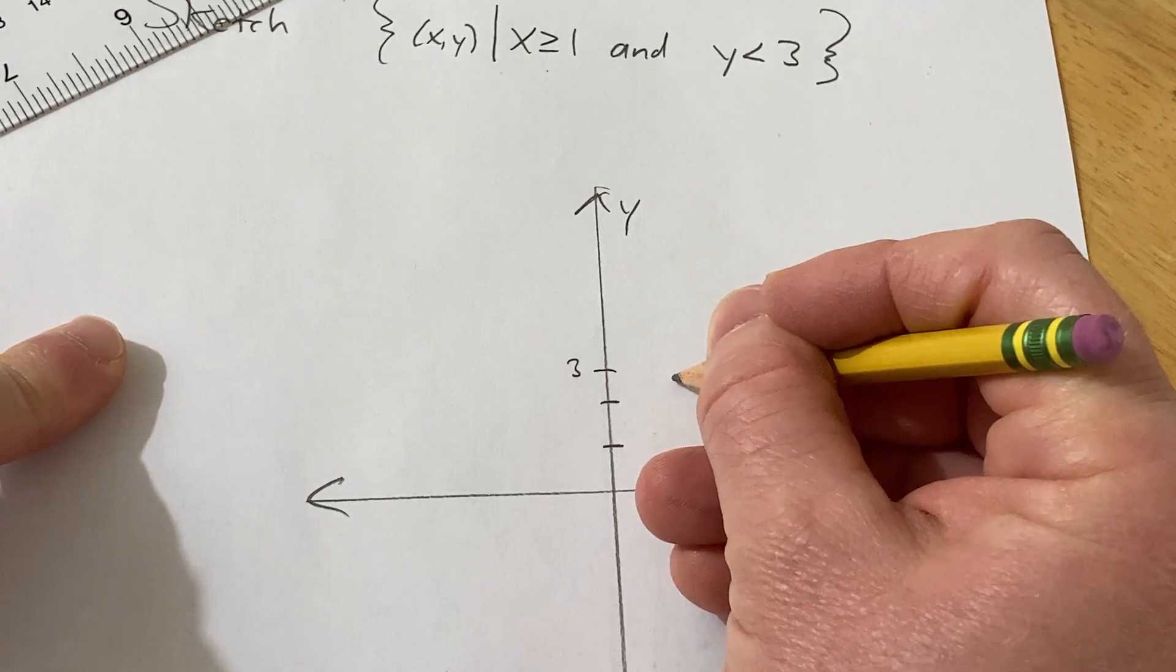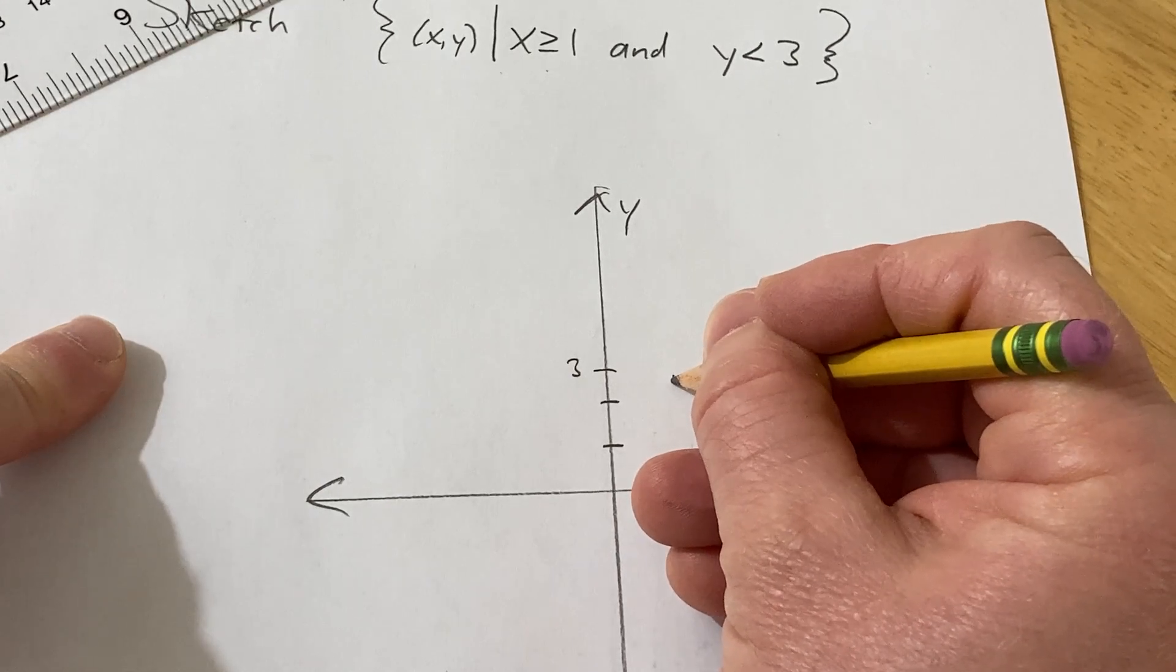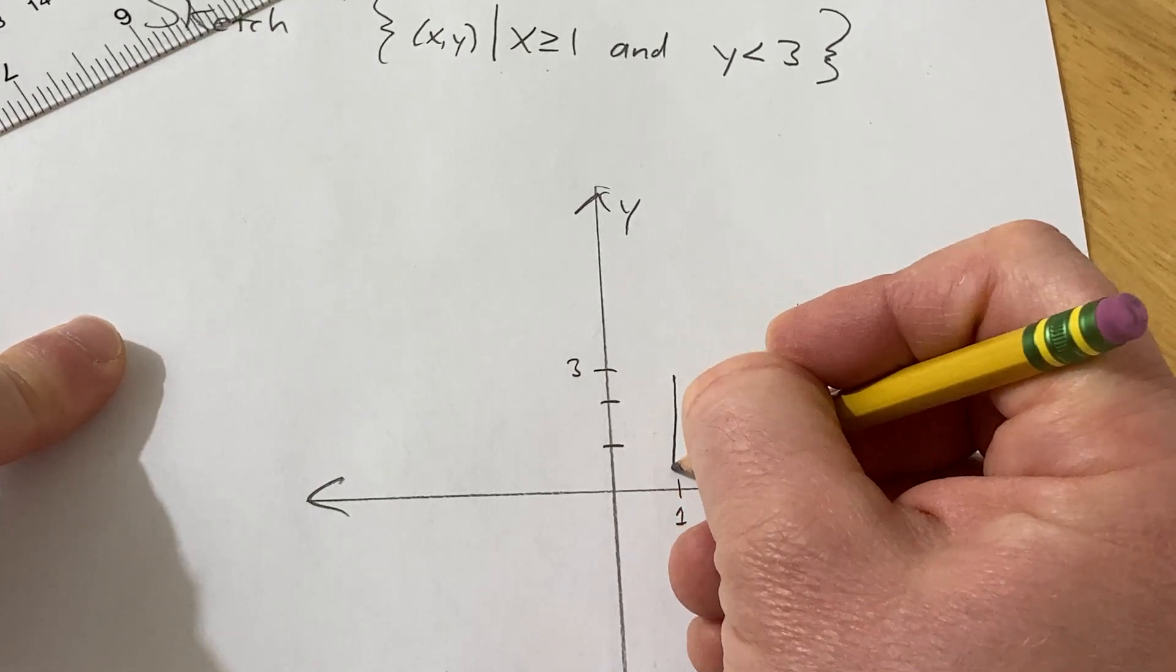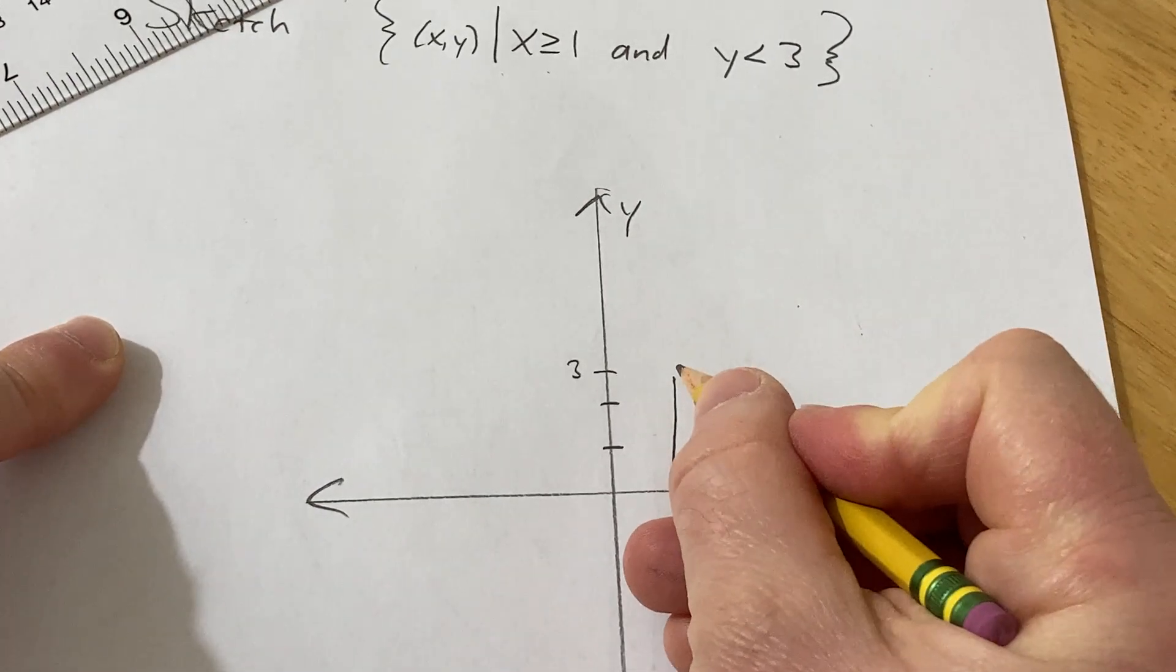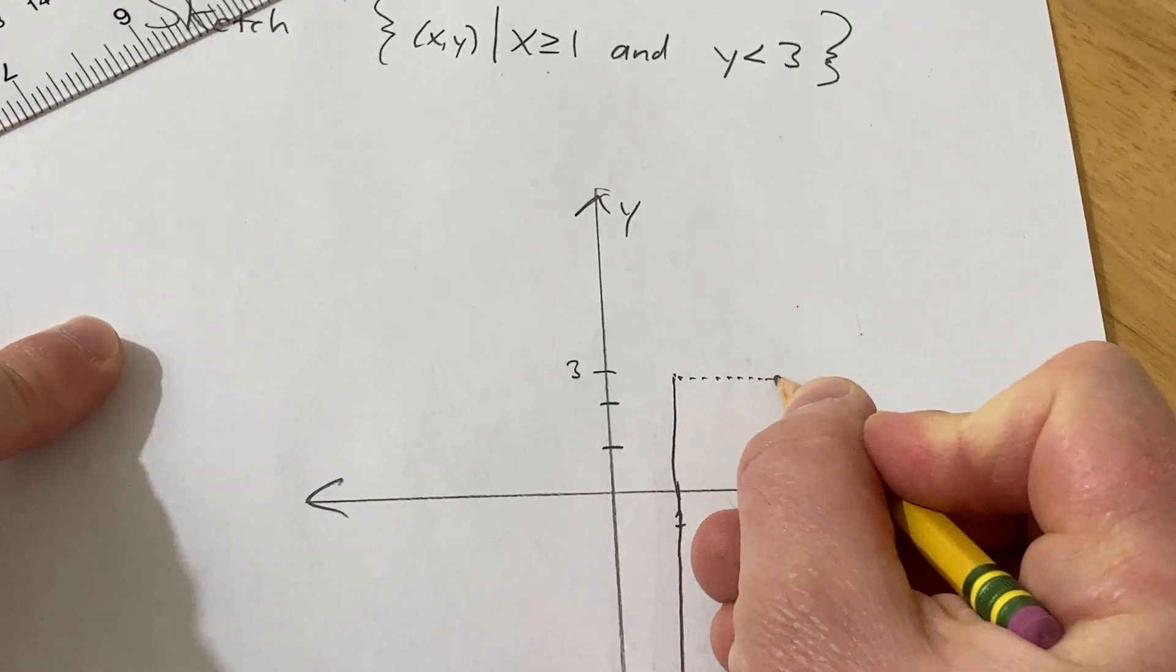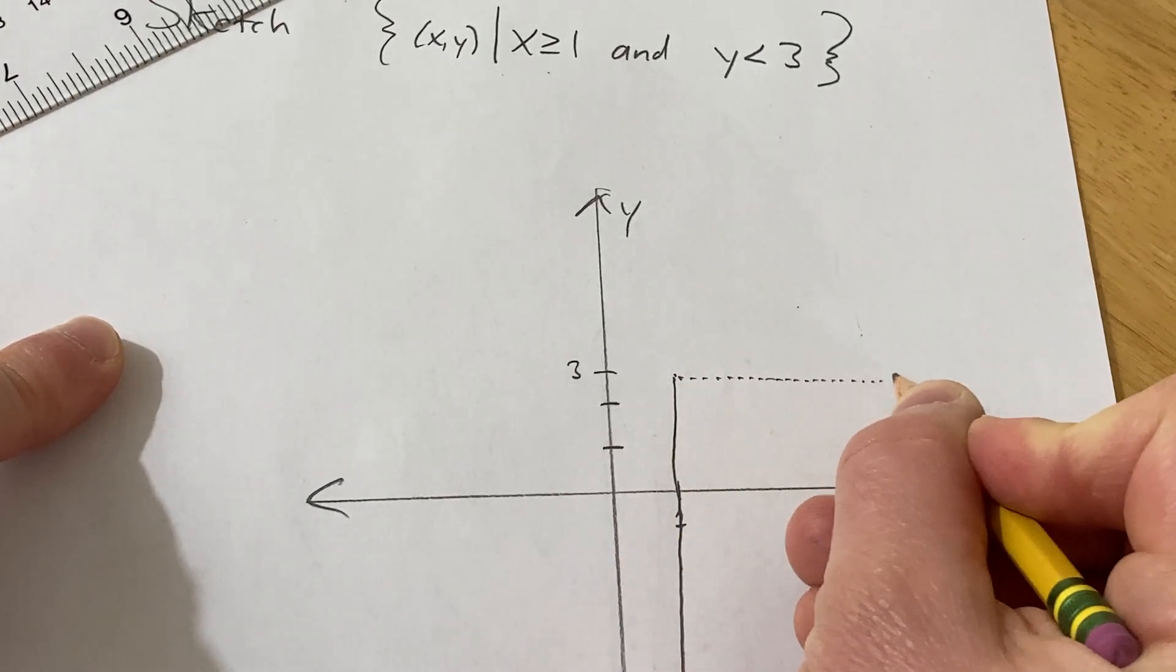So basically here, we are going to have a solid line coming down, and then here we have a dotted line like this.